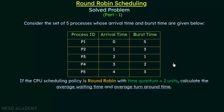This problem is a little different from the previous example. In the previous lecture, arrival times were not given and it was assumed that all processes arrived at the same time, which made it easier. But in this problem, arrival times are also given, so we have to keep them in mind and be very attentive when solving.